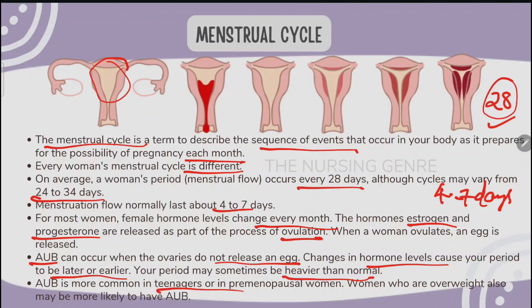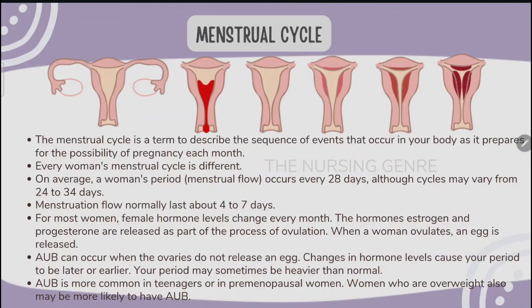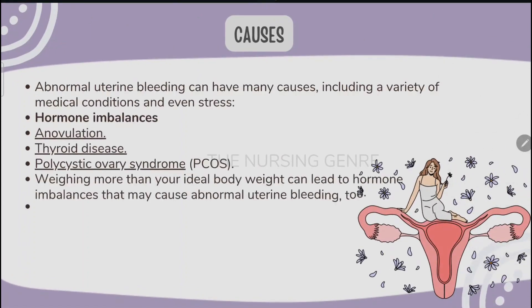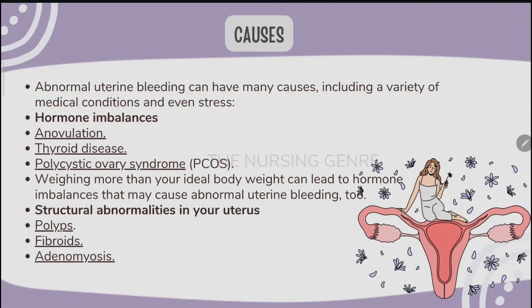AUB is more common in teenagers and in premenopausal women. When you are overweight, you may also be more likely to have abnormal uterine bleeding. There are many causes of abnormal uterine bleeding, including a variety of medical conditions and even stress.